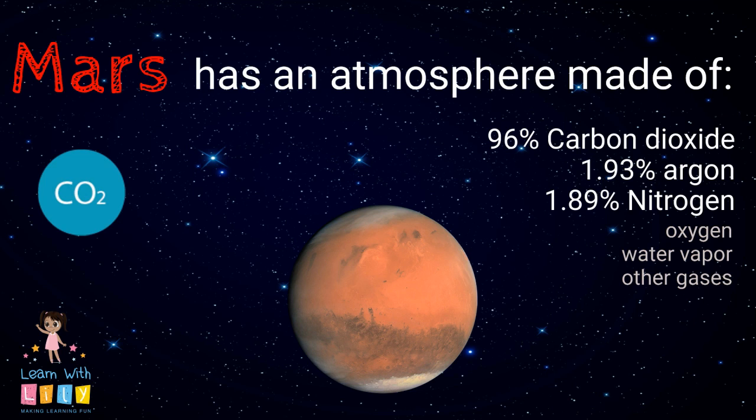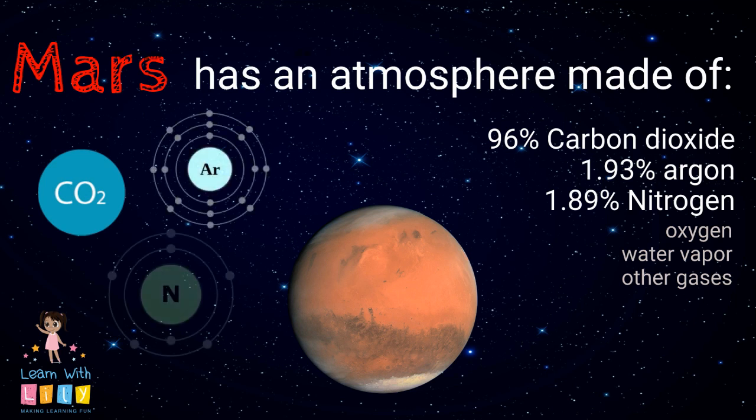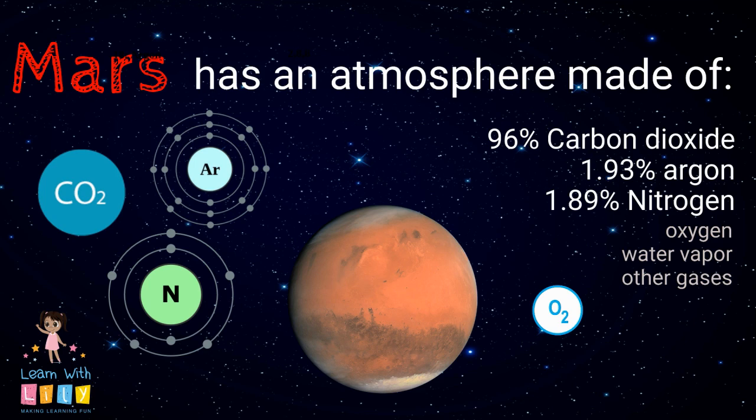Mars has an atmosphere made of about 96% carbon dioxide, less than 2% of argon, and less than 2% of nitrogen. There are also trace amounts of oxygen, water vapor, and other gases in Mars' atmosphere.